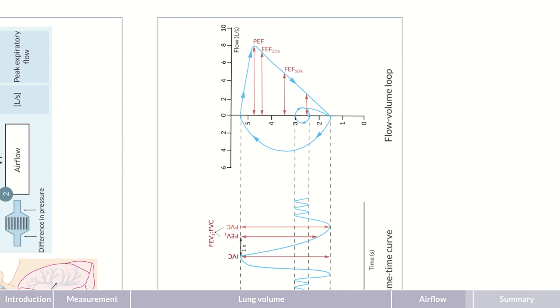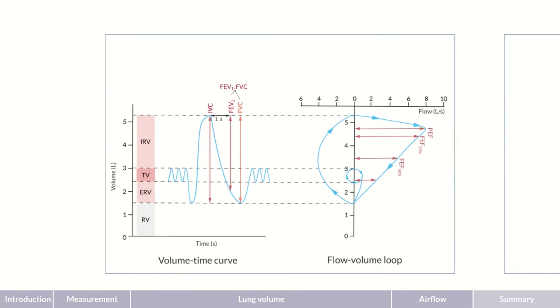For example, a decrease in only the FEF 50% and FEF 75% indicates peripheral airway obstruction. Okay, so that wraps it up on spirometry and its important parameters.